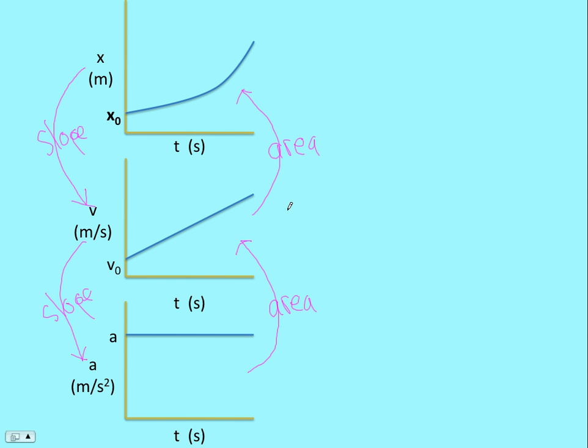Using these relationships, we can come up with all the kinematics equations we need for constant acceleration. So let's start down here. We have acceleration versus time, and it's constant acceleration. You can see that by the flat line that just stays at a equals a, whatever that value is.